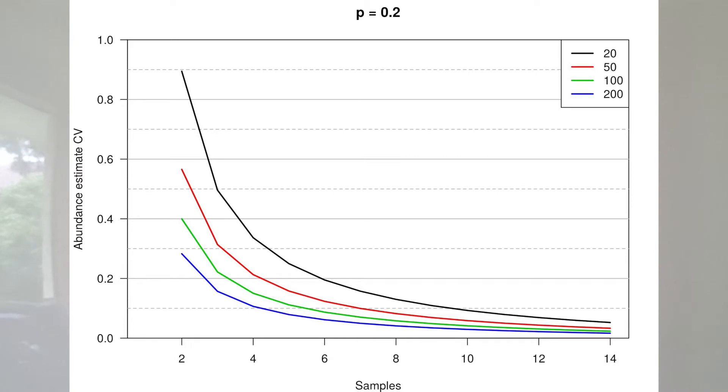Here I've got a couple of graphs. The first one here is when we have our capture probability P equal to 0.2. On this graph, along the x-axis we have the number of samples, the number of times we repeatedly sample this population. Note how that coefficient of variation decreases as the number of samples increases.